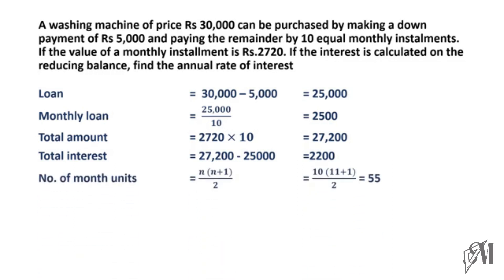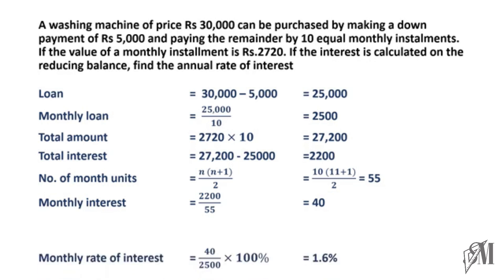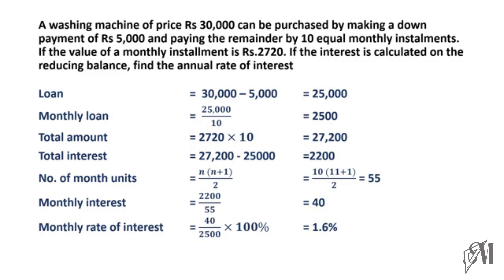We calculate the number of month units using n(n+1)/2 with n=10, giving 55 month units. In 55 month units, 2,200 rupees is paid as total interest, so the monthly interest is 2,200 divided by 55, which equals 40 rupees. We know the monthly loan is 2,500 rupees and monthly interest is 40 rupees, so the monthly rate of interest is 40/2500 × 100 = 1.6%. Multiplying by 12 gives the annual rate of interest as 19.2%.